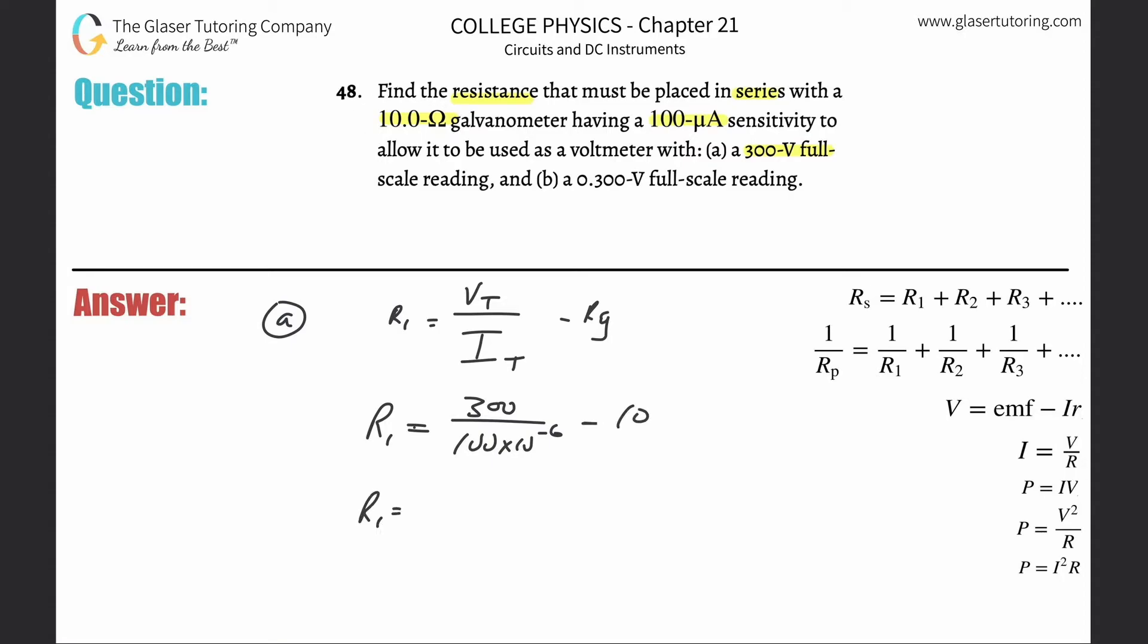Voila, let's calculate. So there's going to be 300 divided by 100 times 10 to the minus 6 minus 10, and we get an answer so close to 3.00 that we're going to have to round considering sig figs. So it's 3.00 times 10 to the - let's see, one, two, three, four, five, six - yeah, 10 to the 6th, and that is in ohms. If you need that in megaohms, it's obviously three megaohms.